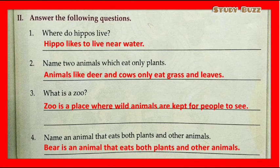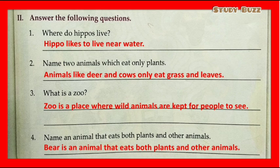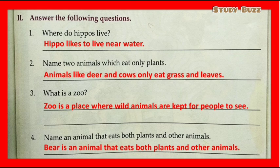Now answer the following questions. Question 1: Where do hippos live? Hippos like to live near water. Question 2: Name two animals which eat only plants. Deer and cows eat only grass and leaves. Question 3: What is a zoo? A zoo is a place where wild animals are kept for people to see. Question 4: Name an animal that eats both plants and other animals. A bear eats both plants and other animals. Here we have completed the textbook exercise. Thanks for studying with Study Bus.